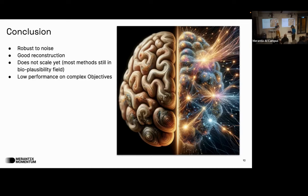Q: Do they mention anything about negative aspects like exploding gradients — are those dealt with when you train the backward weights? A: They talk about recurrent neural networks but don't claim this helps with exploding gradients; they didn't investigate that deeply. But maybe it helps.